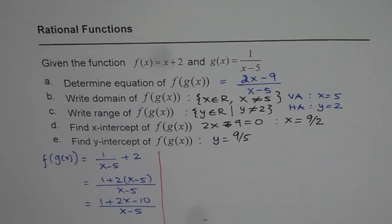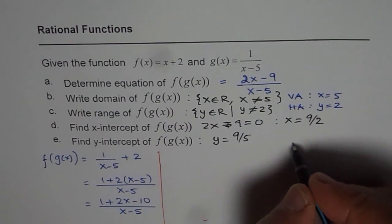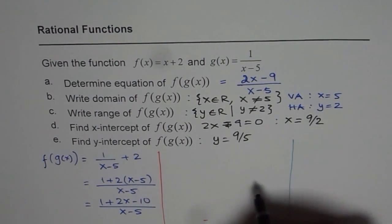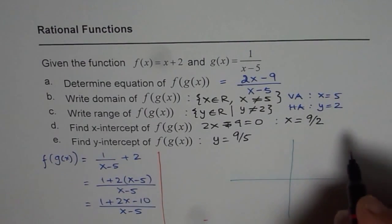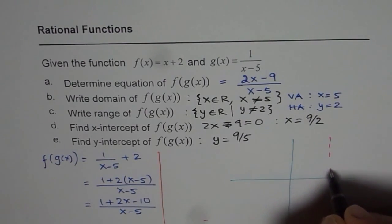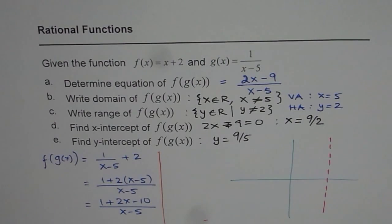Now let us sketch this function to really understand it. We have all the required parameters here. So we have vertical asymptote at x equals 5. Let us say this is our x equals 5. So we have a vertical asymptote at x equals 5.